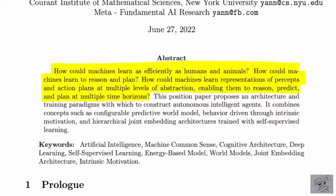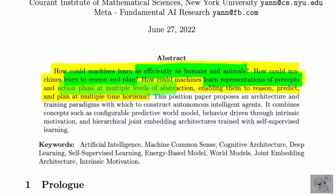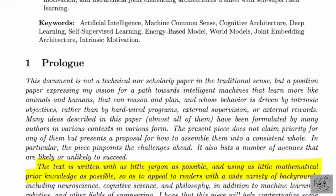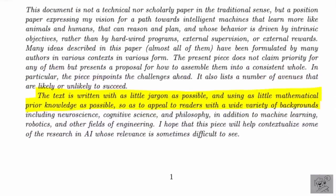The abstract reads: how could machines learn as efficiently as humans and animals? How could machines learn to reason and plan? How could machines learn representations of percepts and action plans at multiple levels of abstraction, enabling them to reason, predict, and plan at multiple time horizons? These things are largely open problems in current deep learning. Efficient learning — especially deep learning — is notoriously data hungry. Reasoning and planning is something that a lot of these systems can't do, and reasoning, predicting, planning at multiple time horizons, including abstraction, are all still out of the realm of current deep learning. So here is Yann LeCun's position paper on how to reach these things.